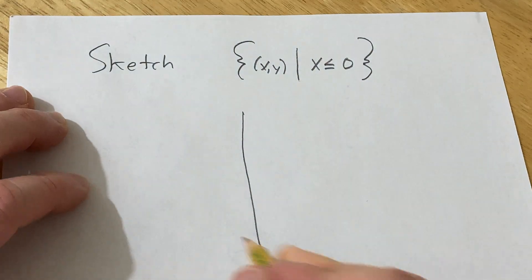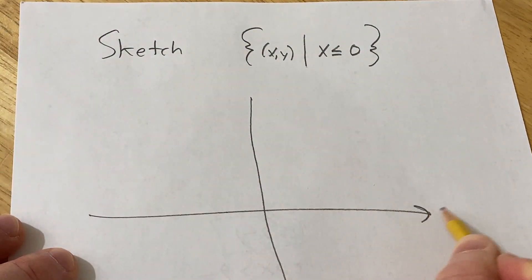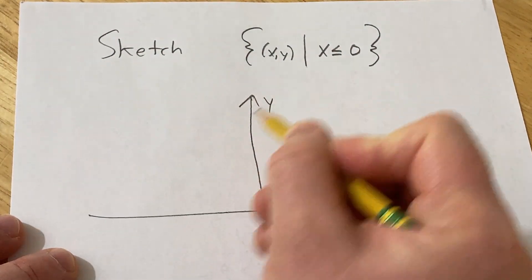So here we have the y-axis and here we have the x-axis, this is x, this is y.